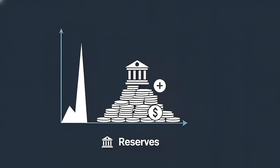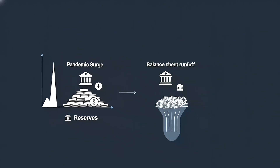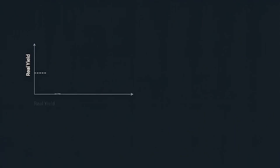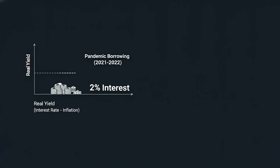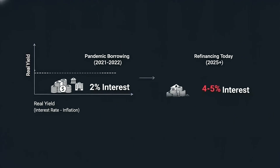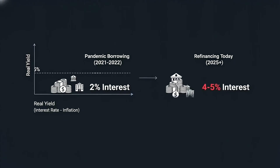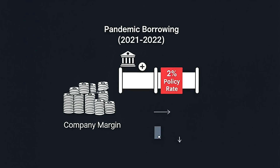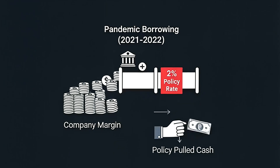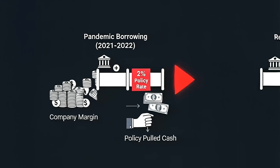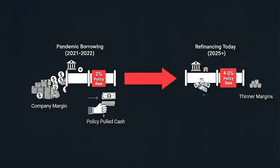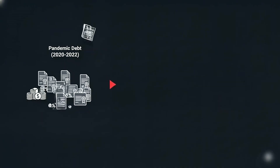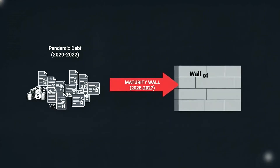Balance sheet runoff — when the Fed lets bonds mature without replacing them — drained reserves. Real yield, the interest rate minus inflation, rose above 1.5% on long treasuries. Companies that borrowed at 2% now refinance closer to 4 or 5%. That spread — the gap between two interest rates — decides margins more than any headline. Policy pulled cash from the pipes while rollover costs rose. Coming up: when the maturity wall turns arithmetic into action.